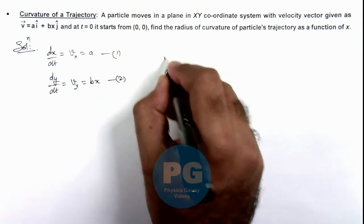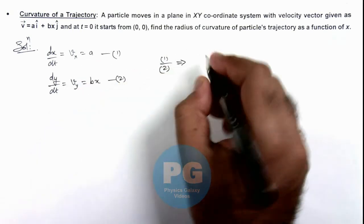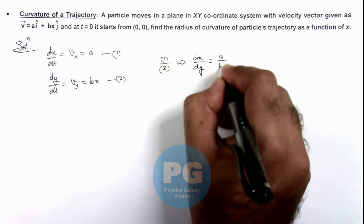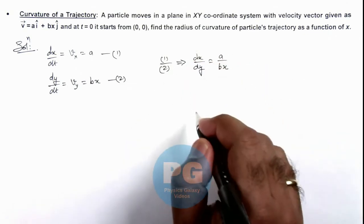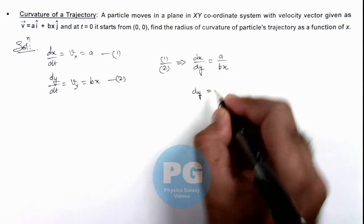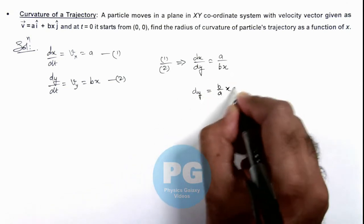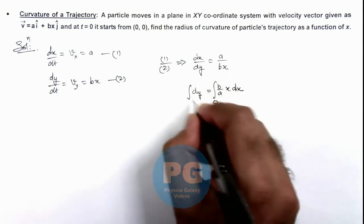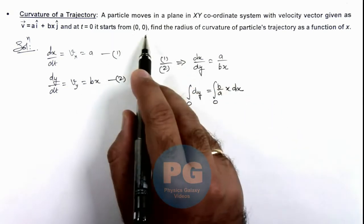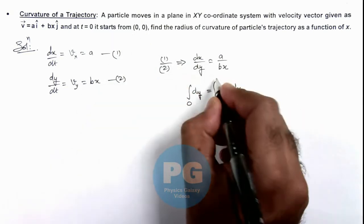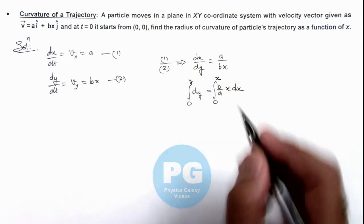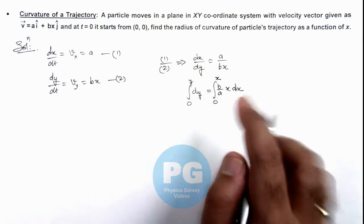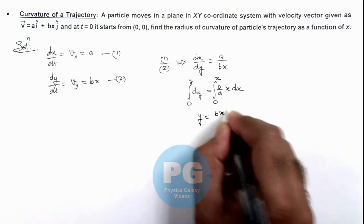Dividing equation 1 by equation 2 gives dx/dy equal to ay divided by bx. Simplifying further, dy equals (b/ay)·x·dx. Integrating this expression with the condition that at x equal to zero, y was also zero (since the particle starts from the origin), and at position x it attains position y, we get y equal to bx²/(2ay).